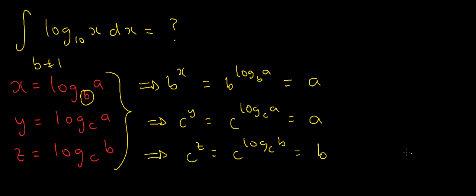So how does that help us? Well, notice that c to the z equals b, and I know that b to the power x equals a. So if I take c to the z and raise that to the power of x, I'm going to get b to the x, which equals a.